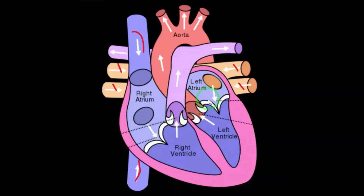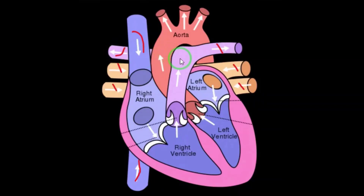The right and left auricles pump blood into the right ventricle and the left ventricle respectively. The right and left pulmonary arteries arise from the pulmonary trunk and supply deoxygenated blood to the lungs.